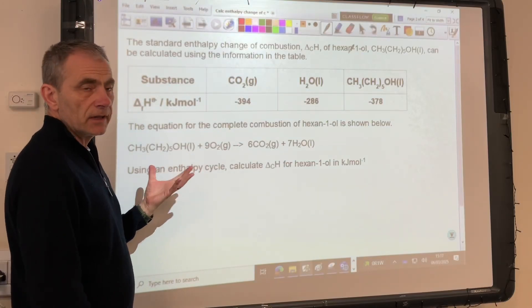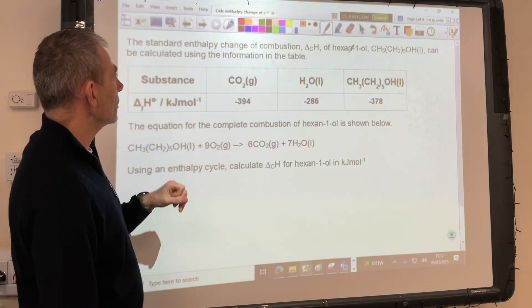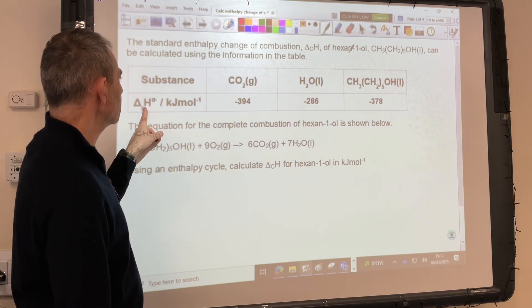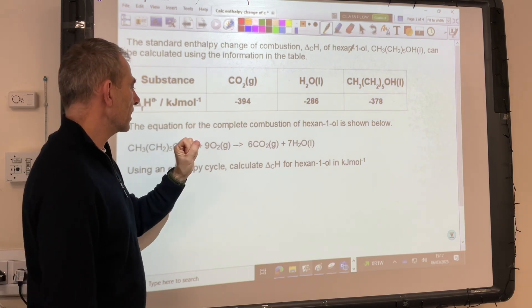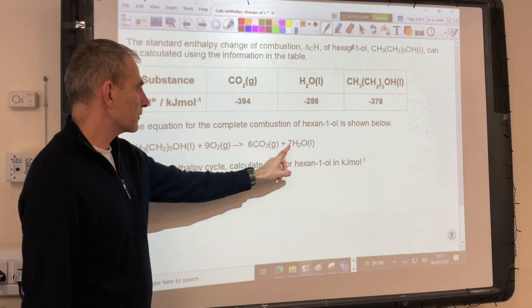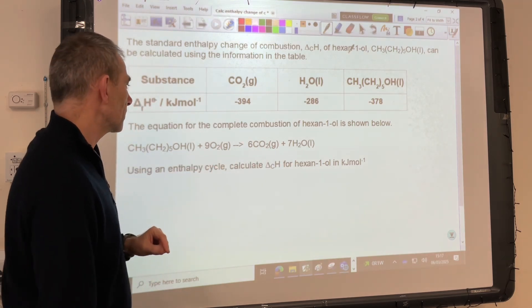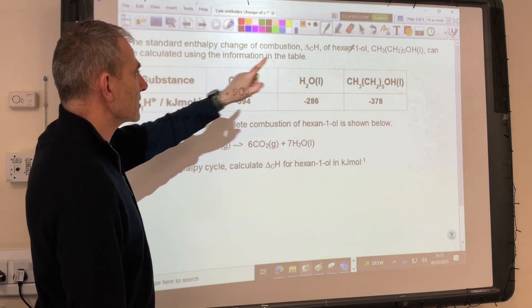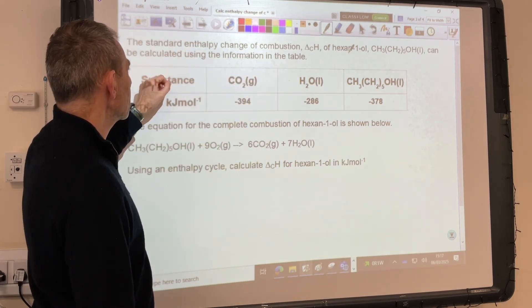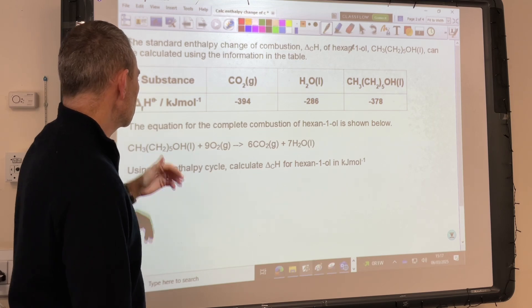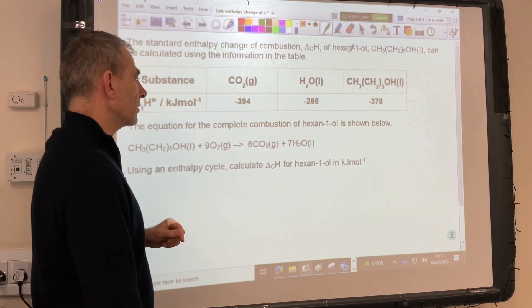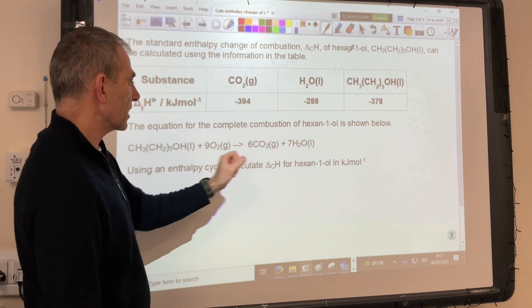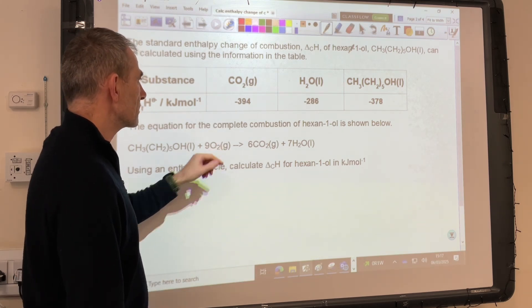I'm going to look at an example of a typical exam question here where we've got to use the standard enthalpy changes of formation to calculate a standard enthalpy change for a reaction which just happens to be a combustion. We're told the standard enthalpy change of combustion for hexane-1-ol can be calculated using the information in the table. There's the equation for the complete combustion of hexane-1-ol. So we're going to use an enthalpy cycle to calculate this enthalpy change for this reaction.